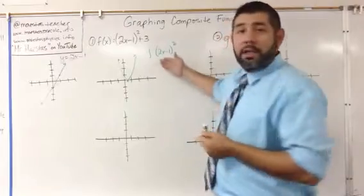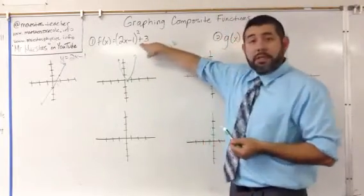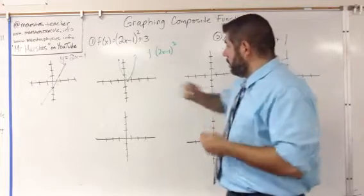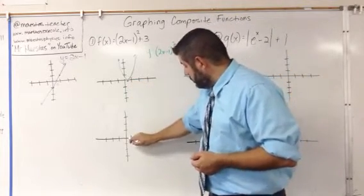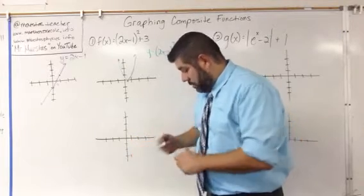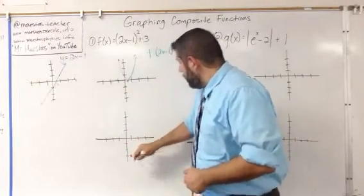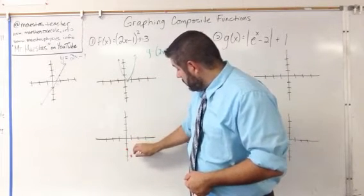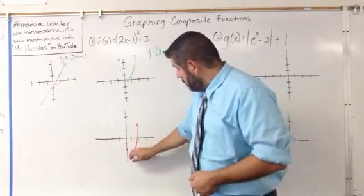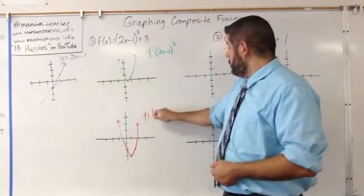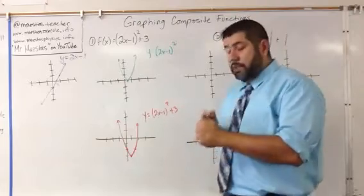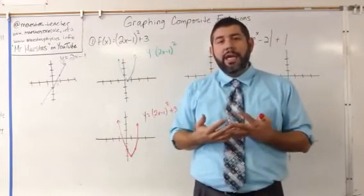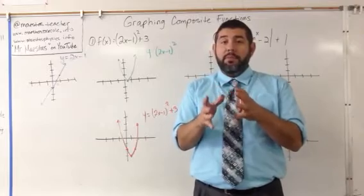The last step here is a translation of 3 down, so we're going to take our graph and move everything down 3 units. We take the vertex and move it down 3 units, and our y-intercept was at 1, so we move that down to negative 2. We know this is symmetric, and so this is our graph of y equals (2x minus 1) squared plus 3 using a step-by-step composite approach. Of course we could also use a translation approach from y equals x squared, but this is a different approach using step-by-step graphing of composites.